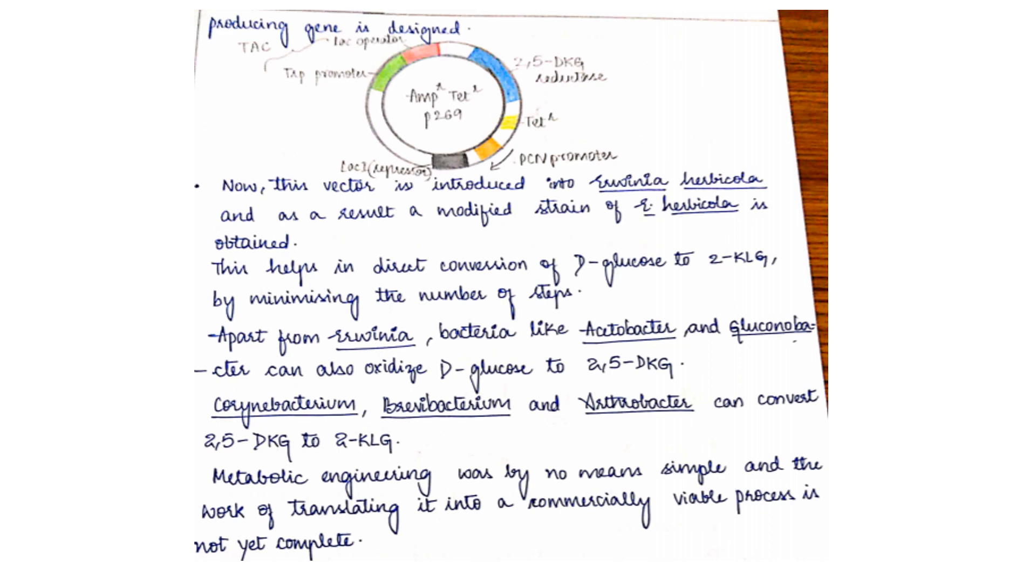Not only Erwinia, we can use other microorganisms like Acetobacter, Gluconobacter, and even Corynebacterium, Brevibacterium, Arthrobacter. Metabolic engineering is very simple and commercially viable, but commercial yield is still difficult.